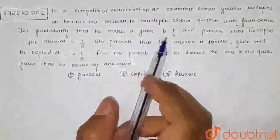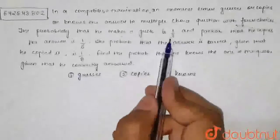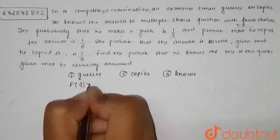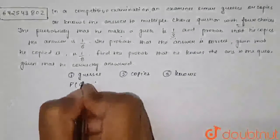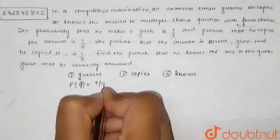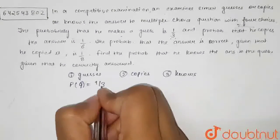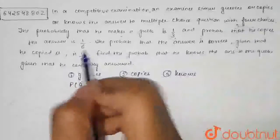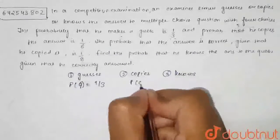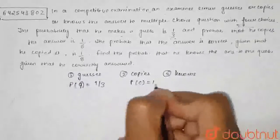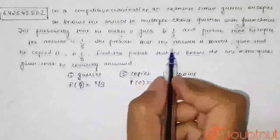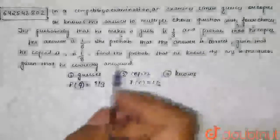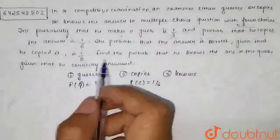The probability that he makes a guess — G is for guess — is one by three. The probability that he copies the answer is one by six. And the probability that the answer is correct given that he copied it is one by eight.